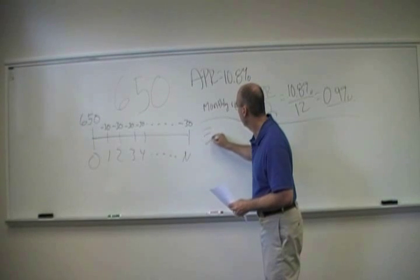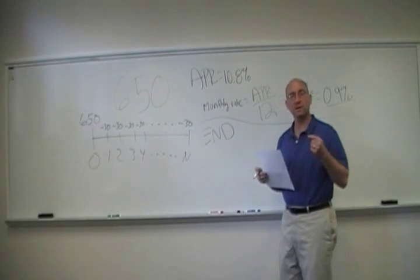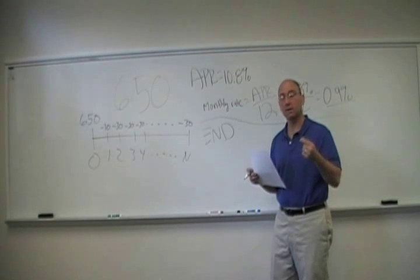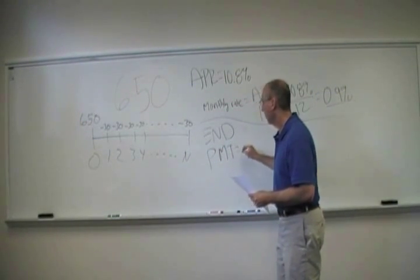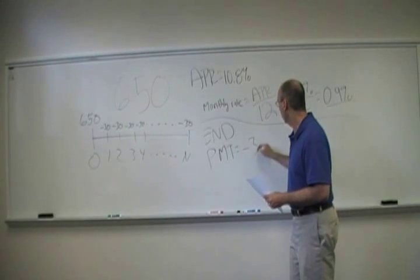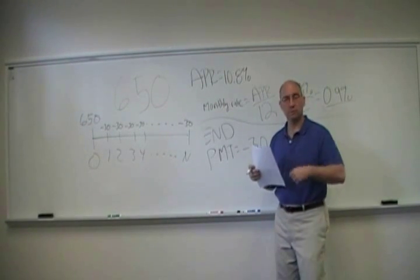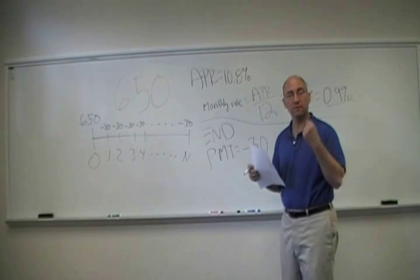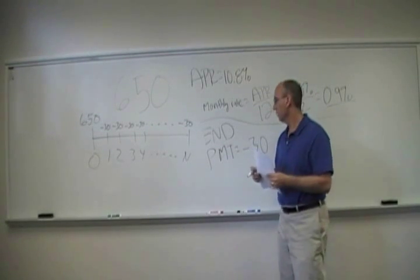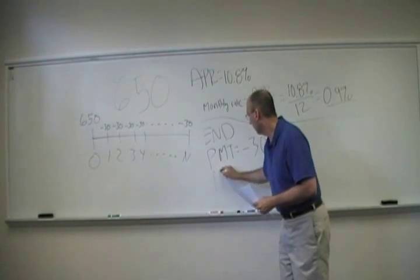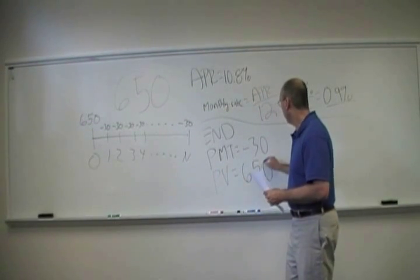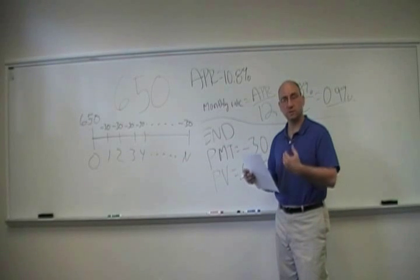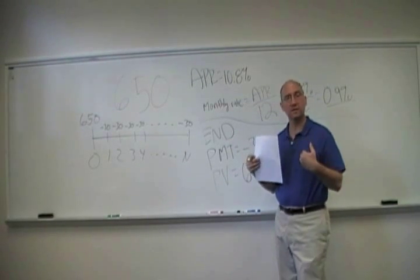The calculator knows that this means when I'm getting a payment, the payment is equal to negative $30, which means there's going to be $30 payments, the first one is in one month. PV is $650, you've got $650 today.